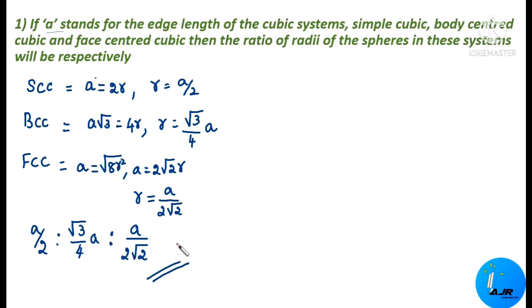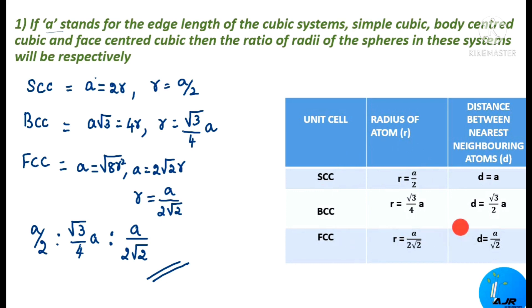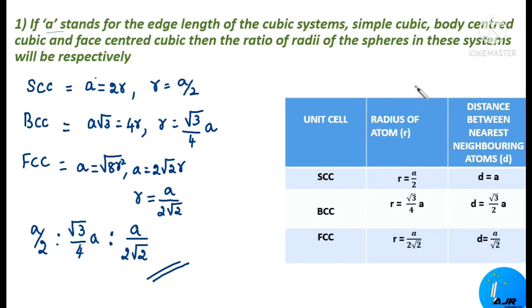I shall show you a tabular column which relates the edge length with the radius and also the distance between the two nearest atoms. This tabular column shows: R = A/2 for simple cubic, R = (√3/4) × A for BCC, and R = A/(2√2) for FCC. The distance D between nearest neighboring atoms is found by multiplying the radius by 2. So for SC: D = A; for BCC: D = (√3/2) × A. You should be thorough with this tabular column to solve these types of problems.